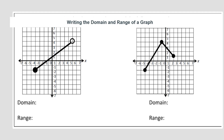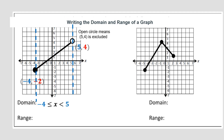Let's find the domain of the graph on the left. Looking from left to right, the domain starts at negative 4 and ends at 5. Notice there's an open circle at the point (5, 4), so we exclude 5. In inequality notation, the domain is: x is greater than or equal to negative 4 but strictly less than 5.